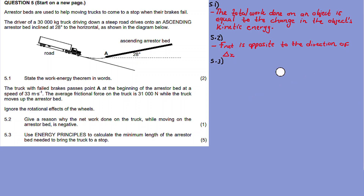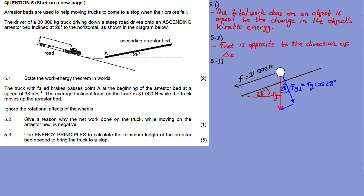This is the truck on the arrestor bed inclined at 28 degrees. There is a frictional force acting down the incline, and then FG acting downward. We split FG into its perpendicular and parallel components. The parallel component and the frictional force are the only two forces doing work on the truck while it moves up the arrestor bed.